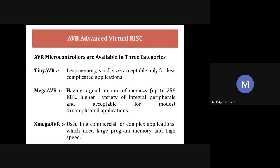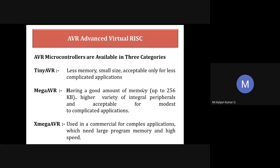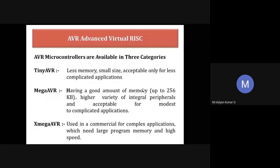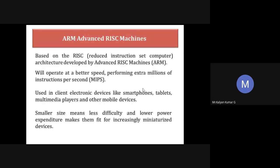AVR microcontrollers are available in three different categories: Tiny, Mega, and X-Mega, classified depending on memory size. Tiny has a small memory size and is used for very small, less complicated applications. Mega has larger memory than Tiny with additional peripherals, suitable for a certain range of higher applications. X-Mega has the largest memory, used for very complex high-speed applications.